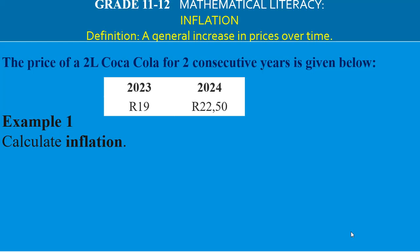Welcome to inflation. A definition of inflation is given — inflation is basically a general increase in prices. When prices go up, that is inflation. An example is given: the price of a two-litre Coca-Cola for two consecutive years. The price was R19 in 2023 and R22.50 in 2024.